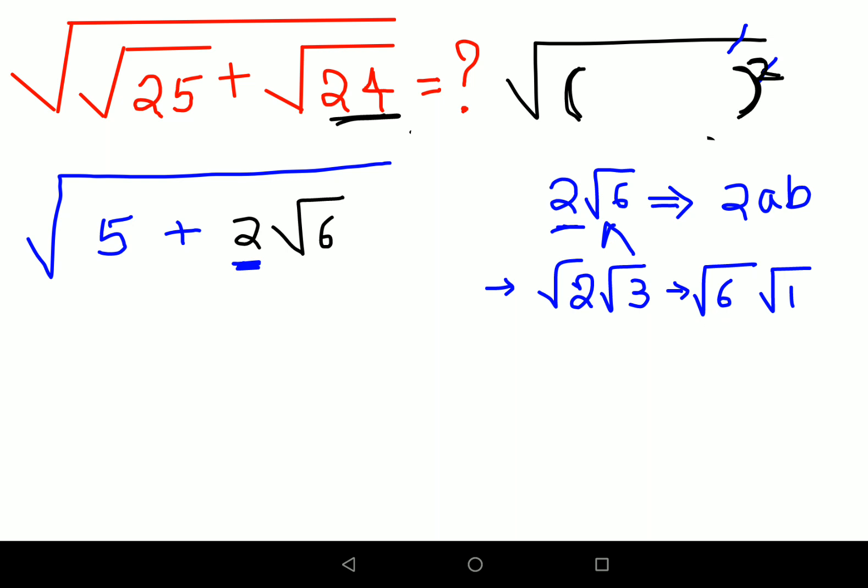Why? Because see, I need to write the whole square as well, right? Means, I will write this one more time. Like I said, you want this root 6 to be written as root 2 into root 3. Or you can also write this as nothing but root 6 into root 1.